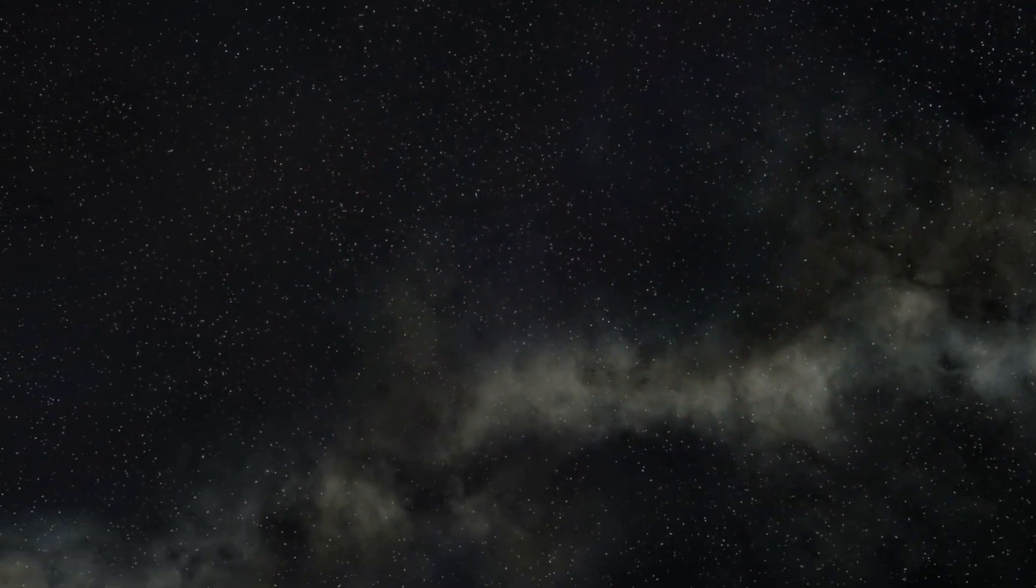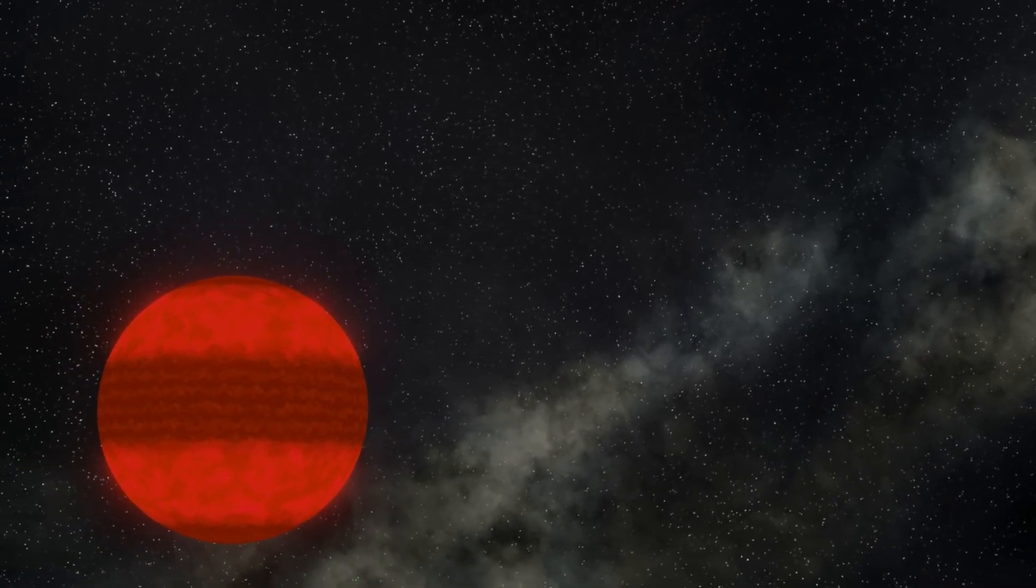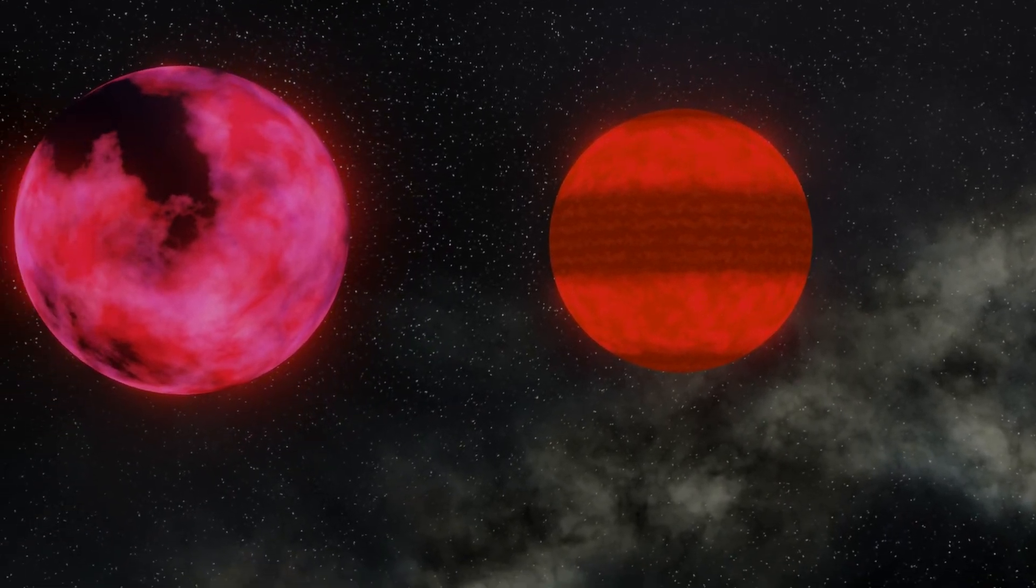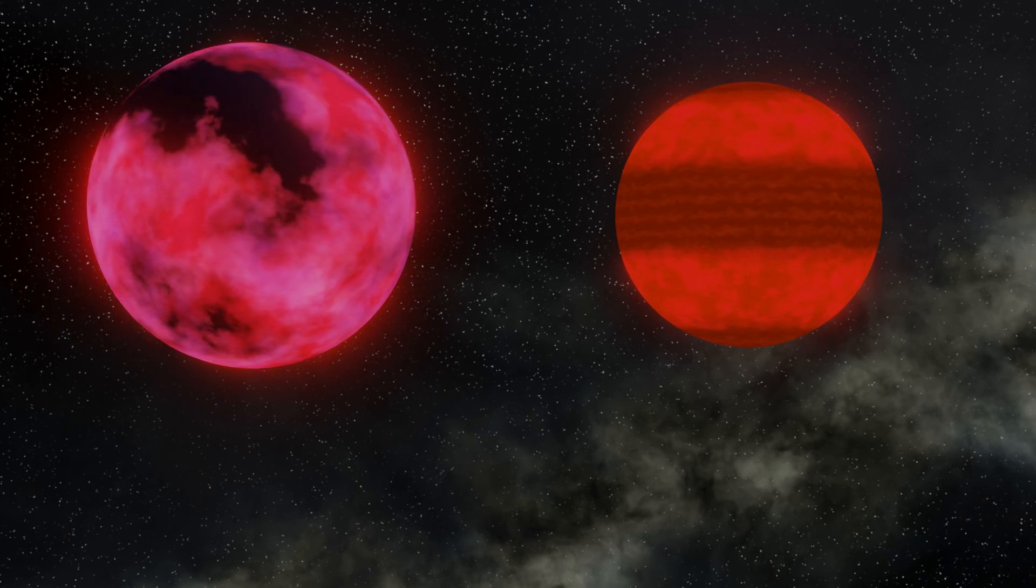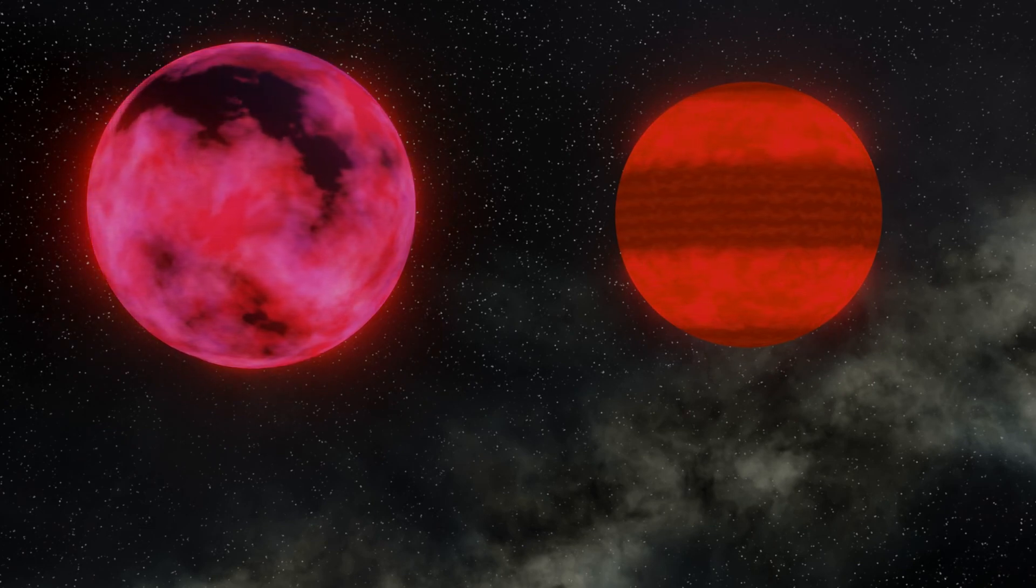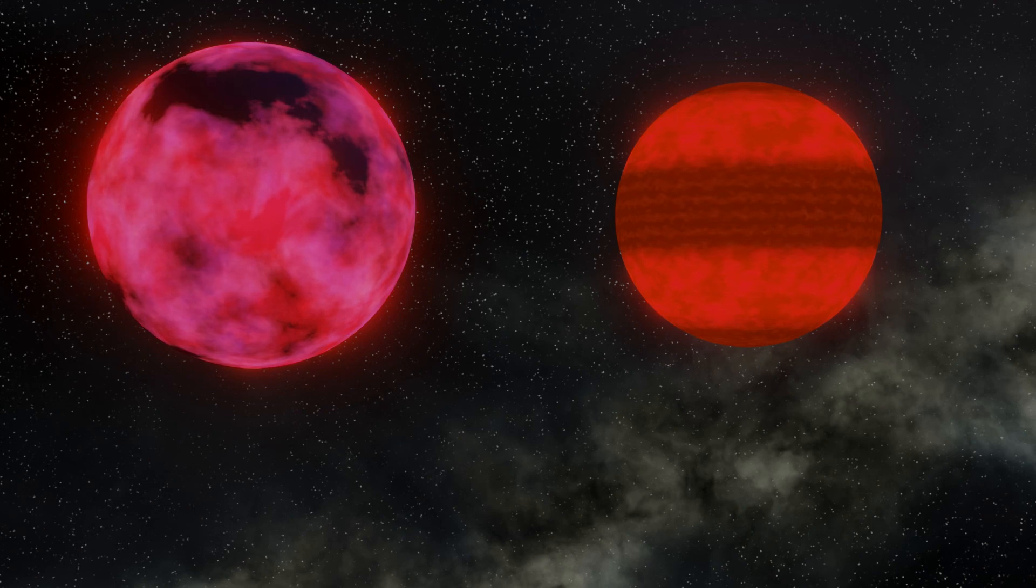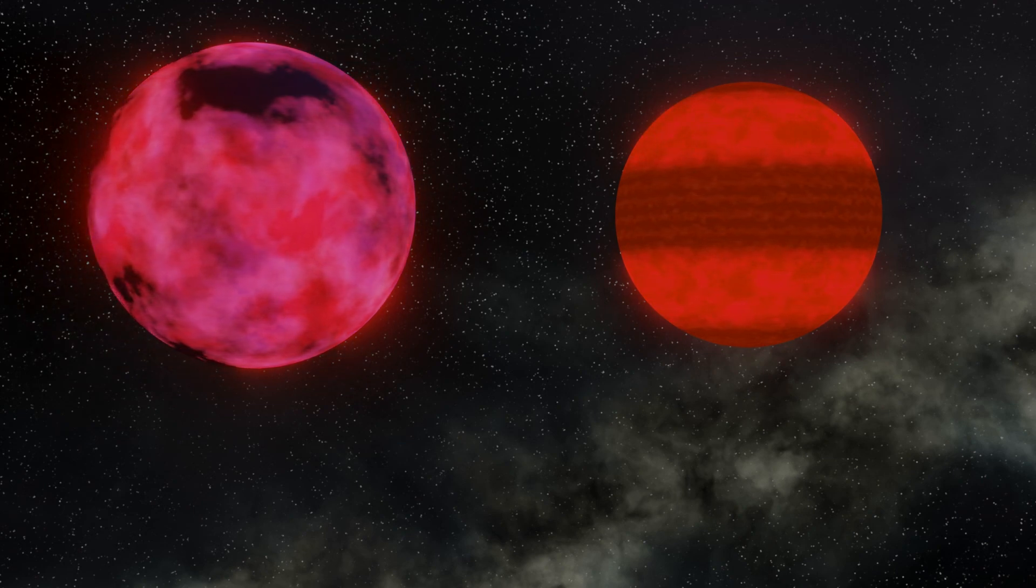An interesting aspect of brown dwarfs is as they cool down the outer layers of the atmosphere become dominated by molecular gases and these gases can then form clouds. Underneath the clouds the fires of nuclear fusion are still burning, faintly, but still there.